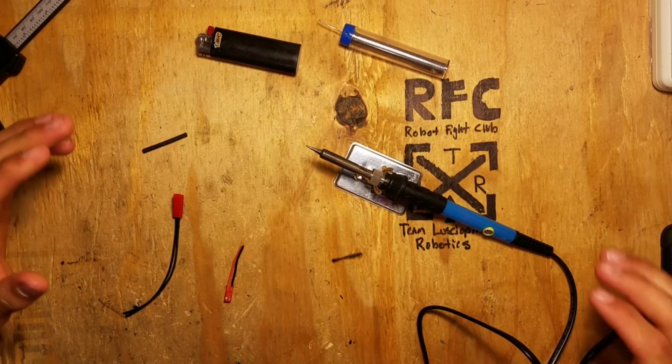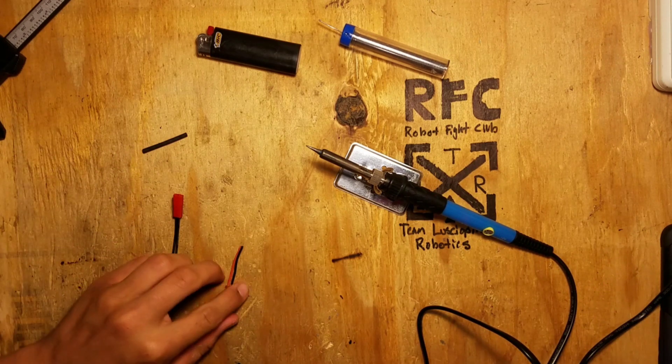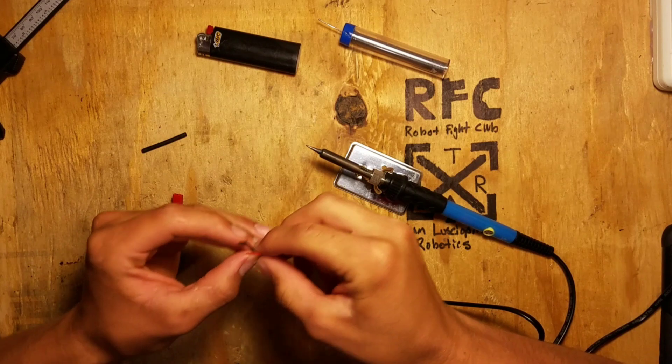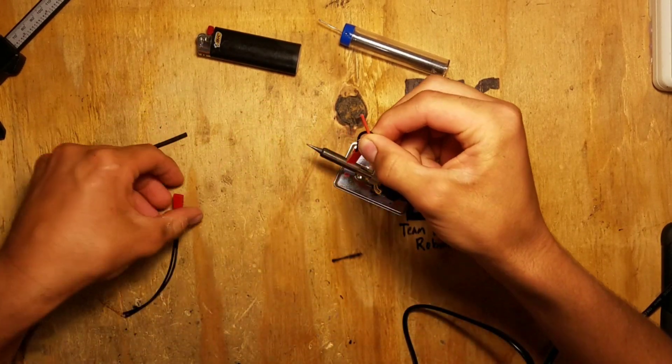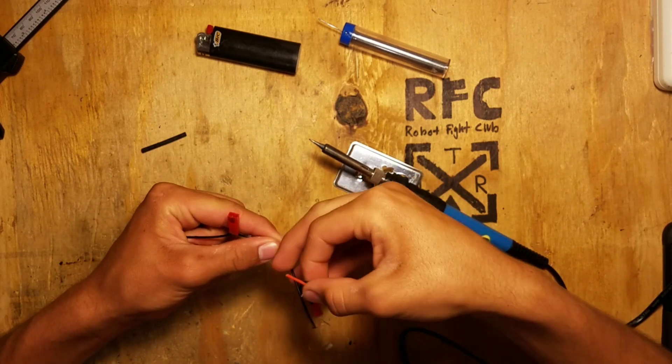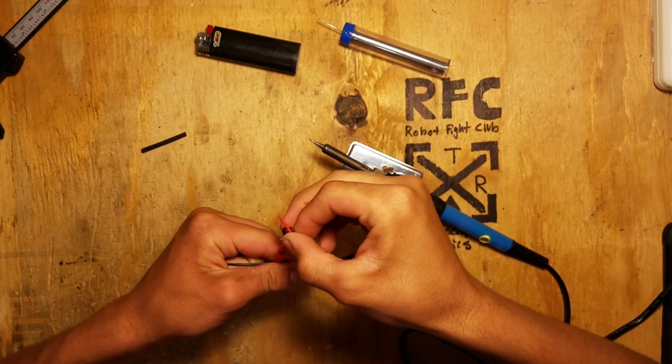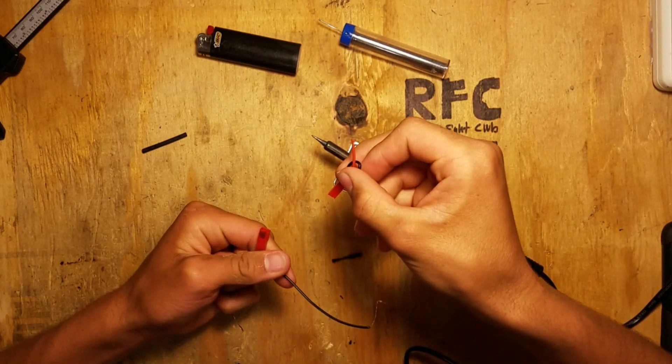By now you can probably already guess what I'm going to do and it's pretty obvious how this is going to work. All I'm going to do is connect these two wires together and that will make a circuit. That way when I put the other JST plug along the line for our power and I plug this into it, it'll complete the circuit and will allow the robot to turn on.